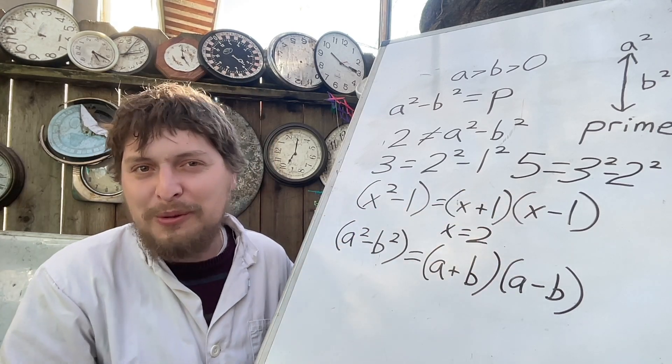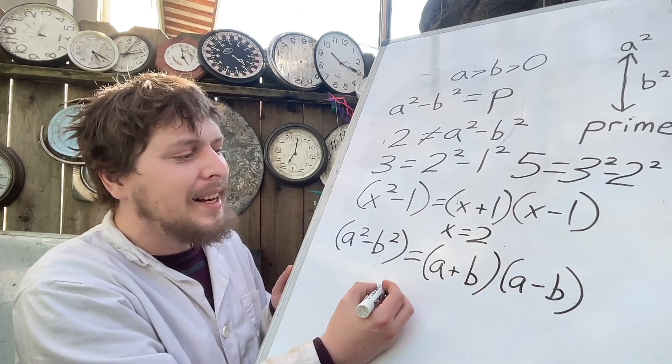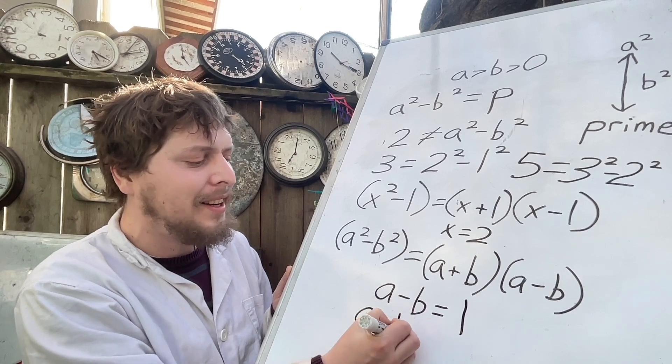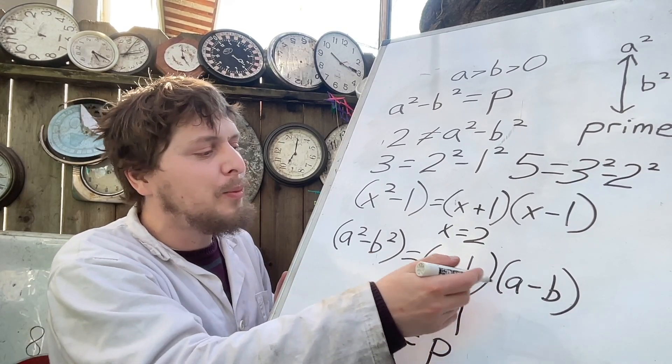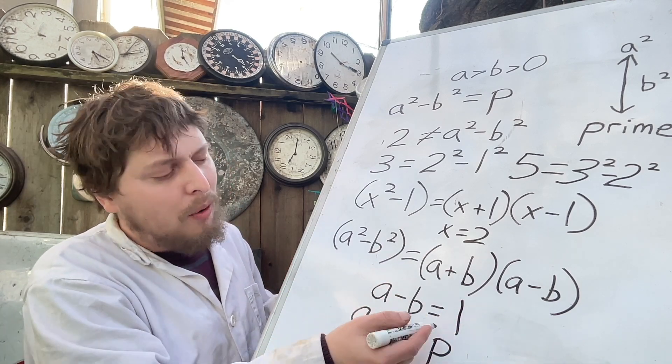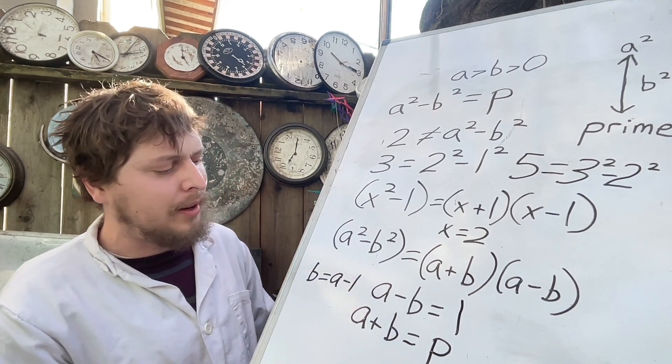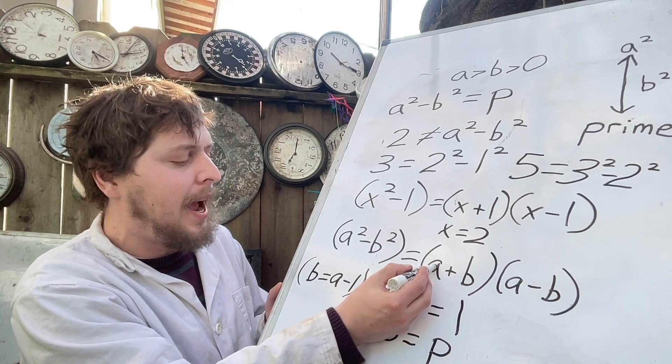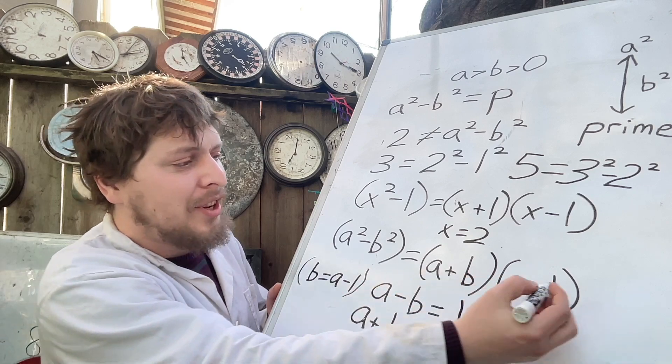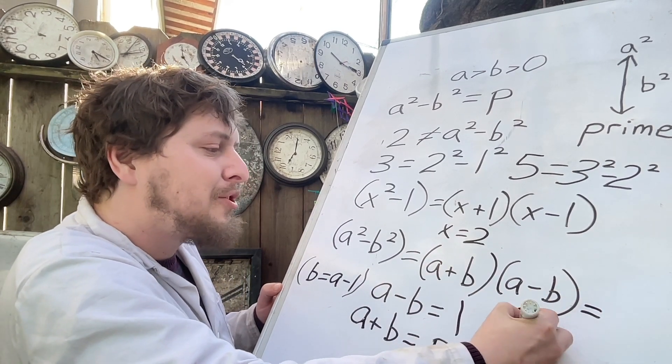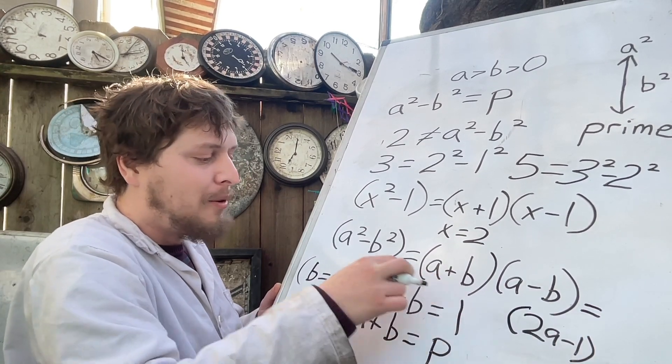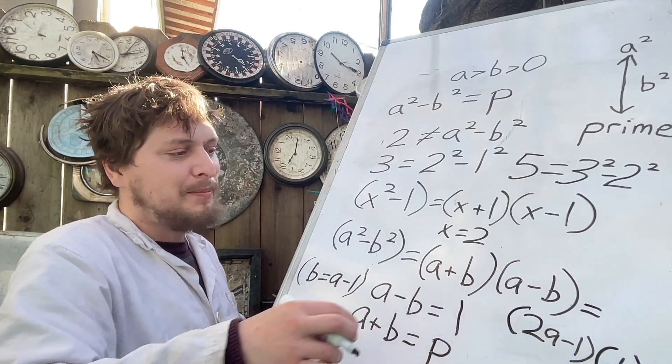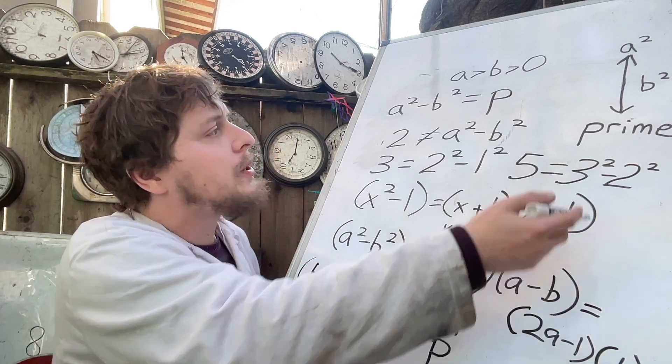So similar to the case of 3, we can note that a minus b is going to have to equal 1. And a plus b is going to equal the prime. So in cases of possible prime results, a minus b is 1. Or in other words, b equals a minus 1. And we can substitute this into this a plus b here, noting that that's going to be a plus a minus 1. So this also equals 2a minus 1, which is what we get here when we substitute in this relationship, times 1, which is the difference between a and b.